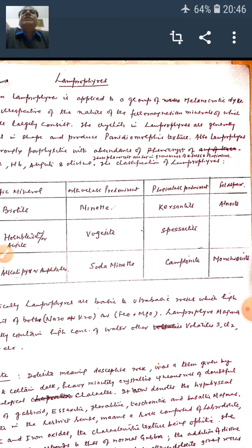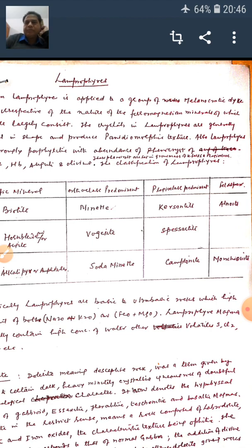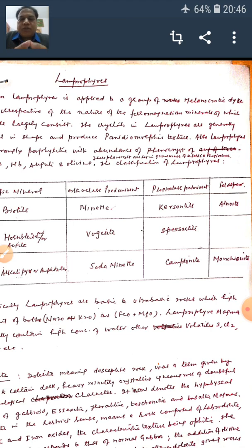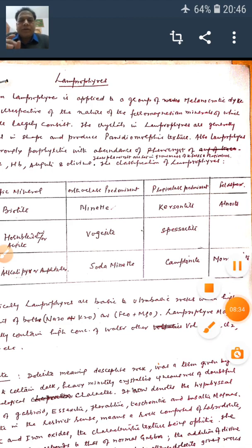To summarize, lamprophyres are melanocratic dikes with mafic mineral content from 60 to 90%. They have panidiomorphic texture, meaning grains are of equal size and of euhedral shape. Igneous rocks which have these typical characters are categorized as lamprophyres. That's all for today. Thank you very much. See you next time.